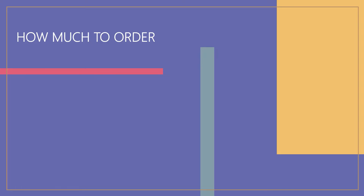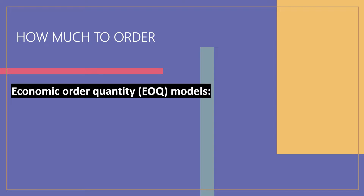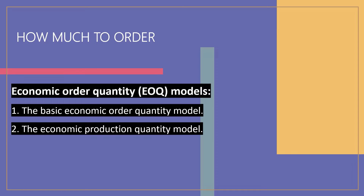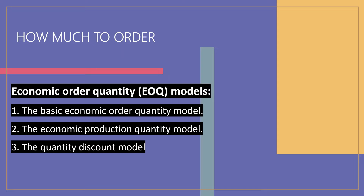The discussion begins with the issue of how much to order. The question of how much to order can be determined by using an economic order quantity, or EOQ, model. EOQ models identify the optimal order quantity by minimizing the sum of certain annual costs that vary with order size and order frequency. Three order size models are described here: the basic economic order quantity model, the economic production quantity model, and the quantity discount model.